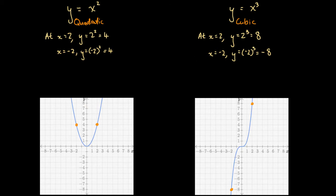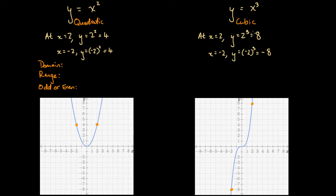Let's look at the implications for two important features: the domain and range of each graph, and whether they are odd or even functions. The domain is the set of possible x values we can input into the equation. For both functions, we can input any x value without getting any inconsistency, so the domain for both is all real x.